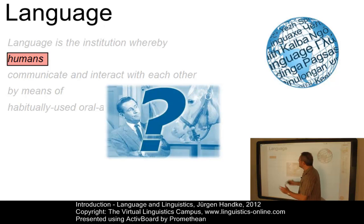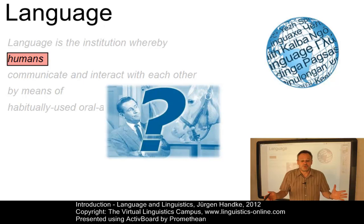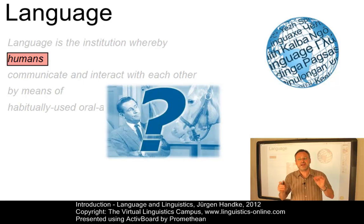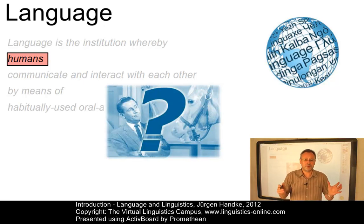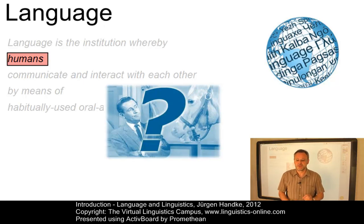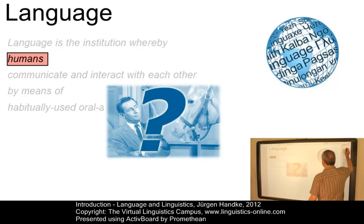Language is confined to humans. Animals certainly communicate with one another. However, all animal communication systems lack the ability to communicate about anything beyond the here and now, and they do not allow novel messages to be produced and understood. So language is confined to humans in a strict sense.